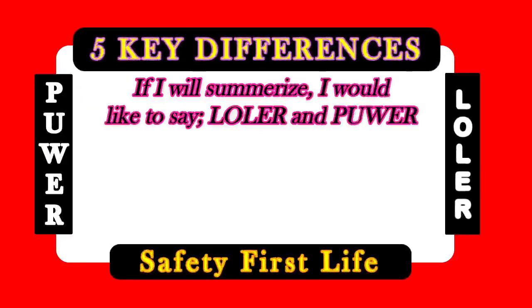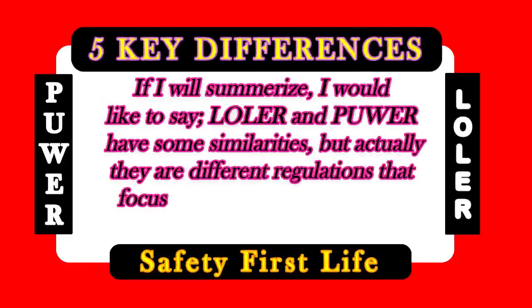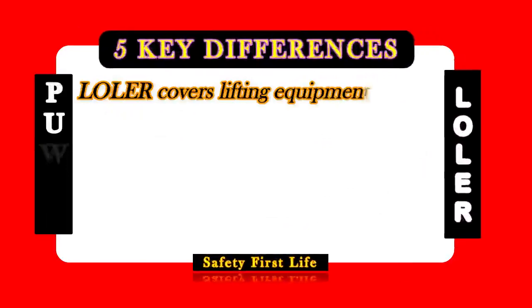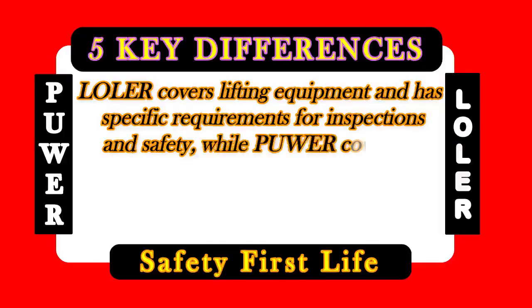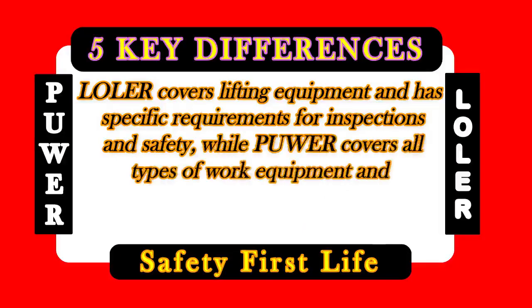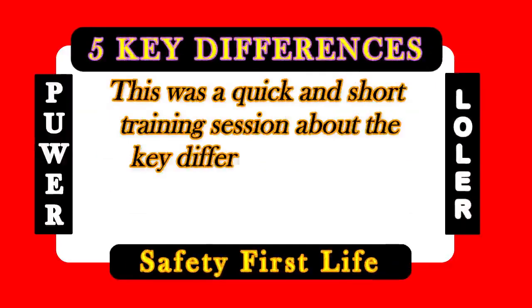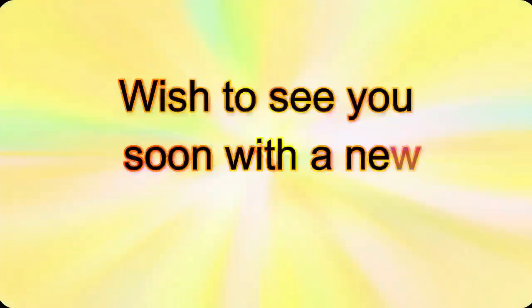To summarize: LOLER and PUWER have some similarities, but they are different regulations that focus on different types of work equipment. LOLER covers lifting equipment and has specific requirements for inspections and safety, while PUWER covers all types of work equipment and requires that it is safe, maintained, and inspected regularly. This was a quick training session about the key differences between LOLER and PUWER. Thanks for watching and don't forget to subscribe. Wish to see you soon with a new HSE tutorial.